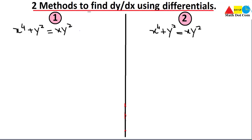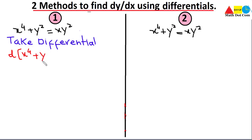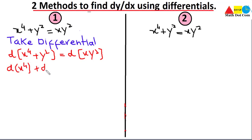Here is the example we are going to work on. In Method 1, we take the differential on both sides. So we write: d of (x⁴ + y²) equals d of (xy²). We split the left-hand side since the terms are added, finding each differential separately: d(x⁴) + d(y²) = d(xy²). The differential of x⁴ gives 4x³ dx.